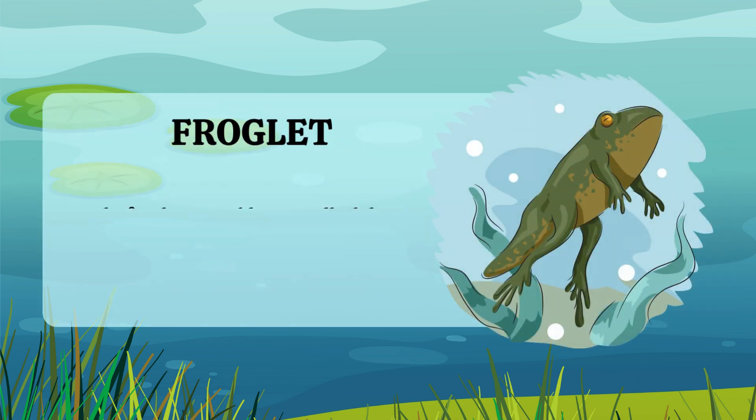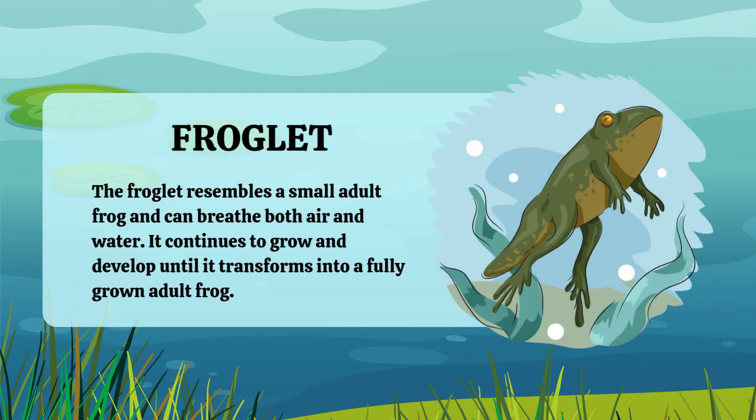The froglet resembles a small adult frog and has the ability to breathe both air and water. During this stage, the froglet continues to grow and develop until it eventually transforms into a fully grown adult frog. This period is essential for its maturation.